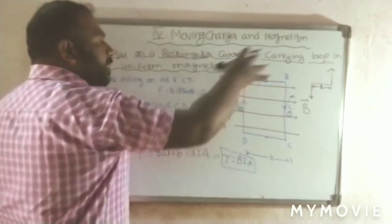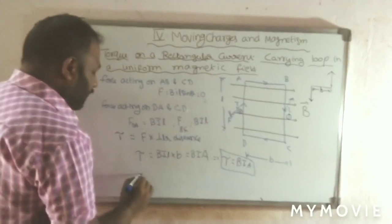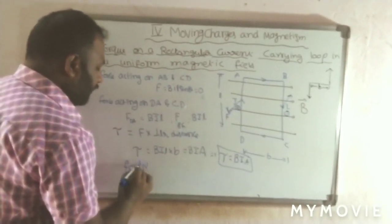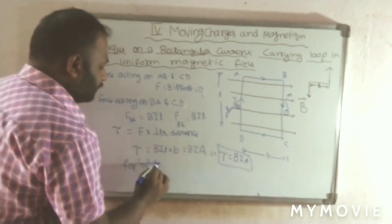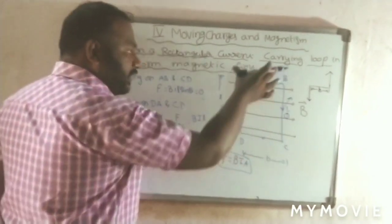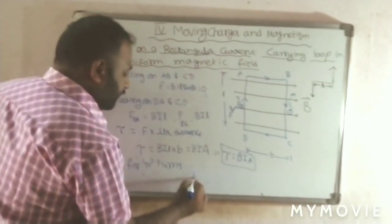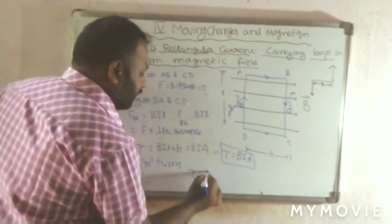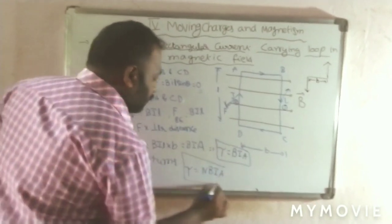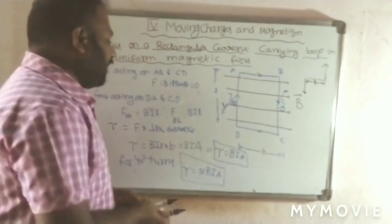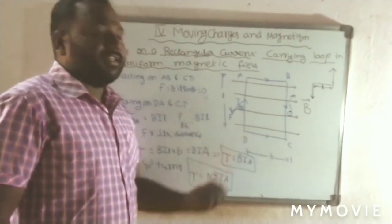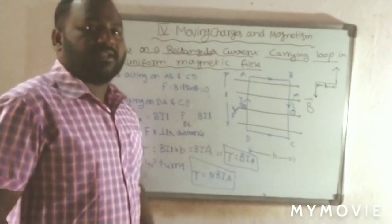But whenever we place N number of turns — if the loop has N number of turns — the torque is equal to N × B × I × A. This is the torque acting on a rectangular loop with N turns placed in this position.